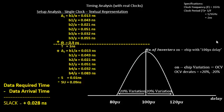Let's continue our discussion on OCV timing. The next step is to take this particular graph and implement the setup timing analysis we did in the last video. This curve says that any combinational cell designed to give a delay of 100 picoseconds will give a maximum delay of 120 picoseconds and a minimum delay of 80 picoseconds — anywhere in that range due to on-chip variations.